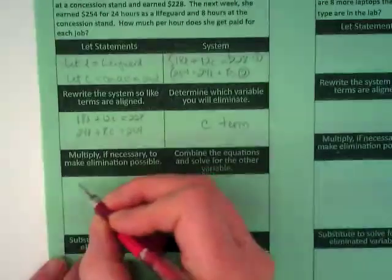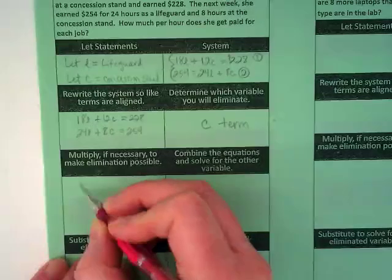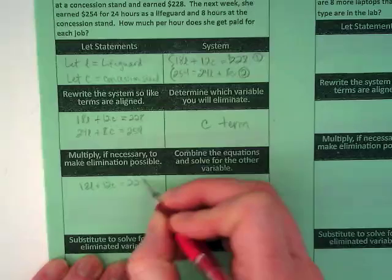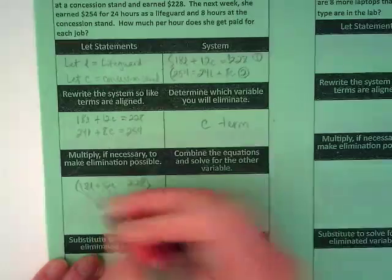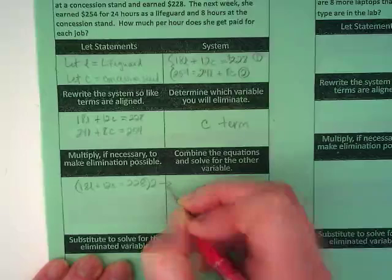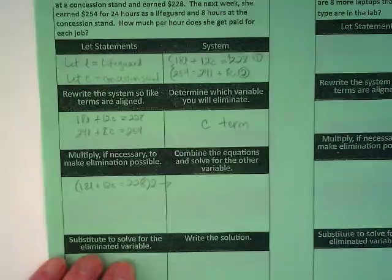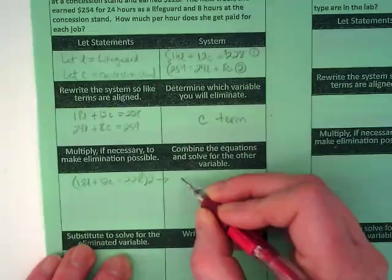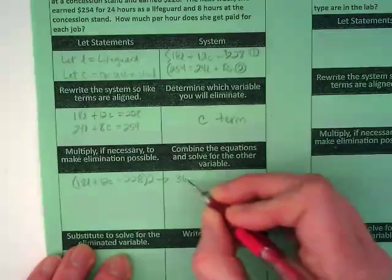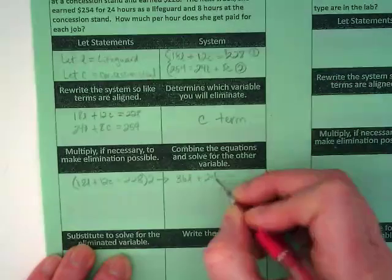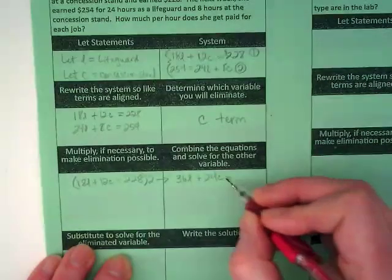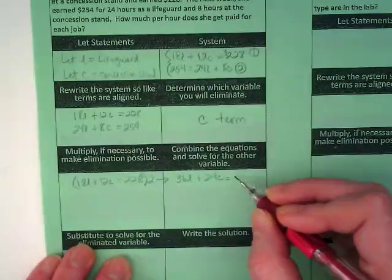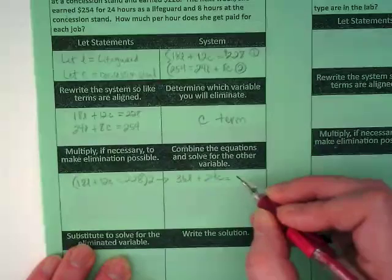And then down here, let's write what we just said. We're going to take 18L plus 12C equals 228 and we're going to multiply that by 2. And rewrite it in the next box. 2 times 18L is going to be 36L plus 24C equals 456.